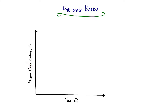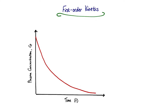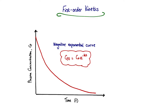We can plot the same plasma concentration versus time graph but this time for first order kinetics. We start at time zero with our highest plasma concentration. The gradient at this point will be steepest because the rate of reaction — represented by the gradient — is proportional to plasma concentration. As plasma concentration falls through elimination, the rate of reaction reduces and the gradient also reduces, so you get a leveling off of the line, ending with a negative exponential curve.